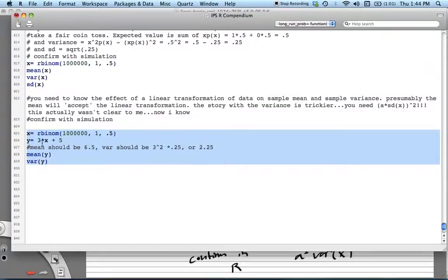I'm going to do 3X plus 5, the same random variable. Our mean should be 3 times 0.5 plus 5, 1.5 plus 5, so 6.5. And the variance should be 9 times 0.25, or 2.25.